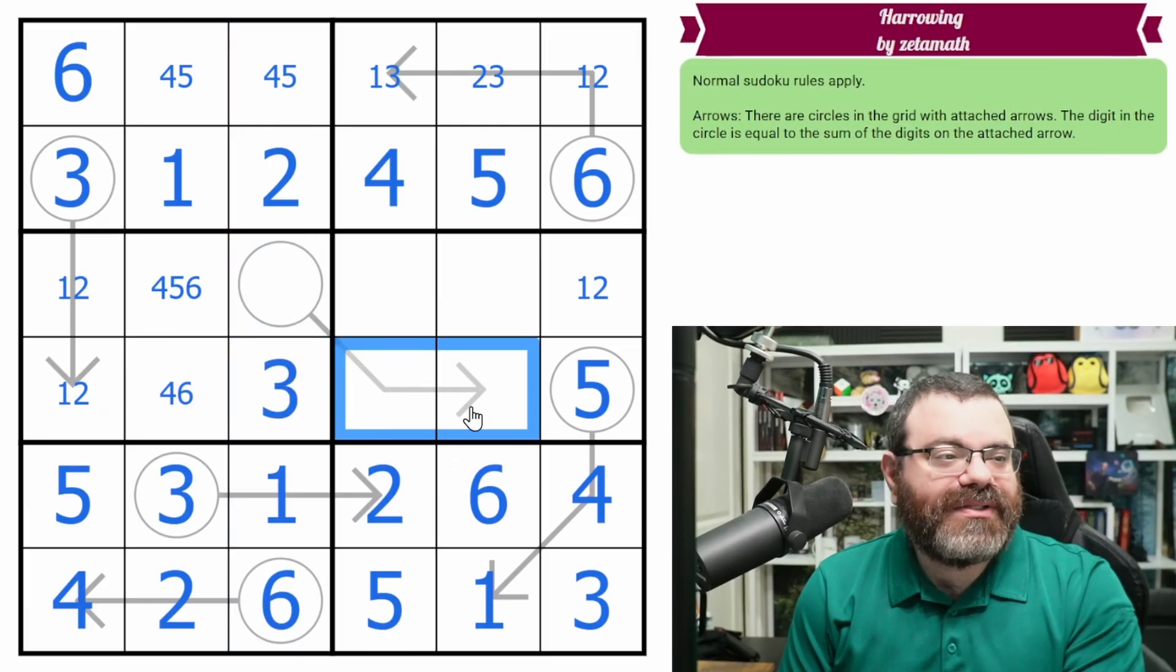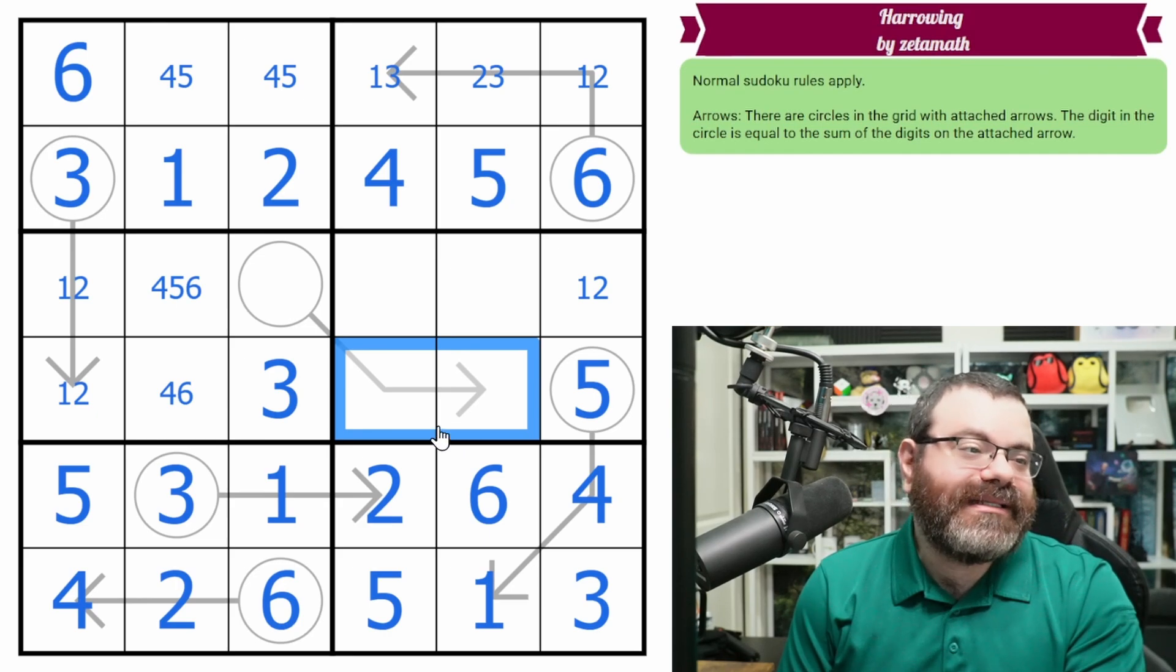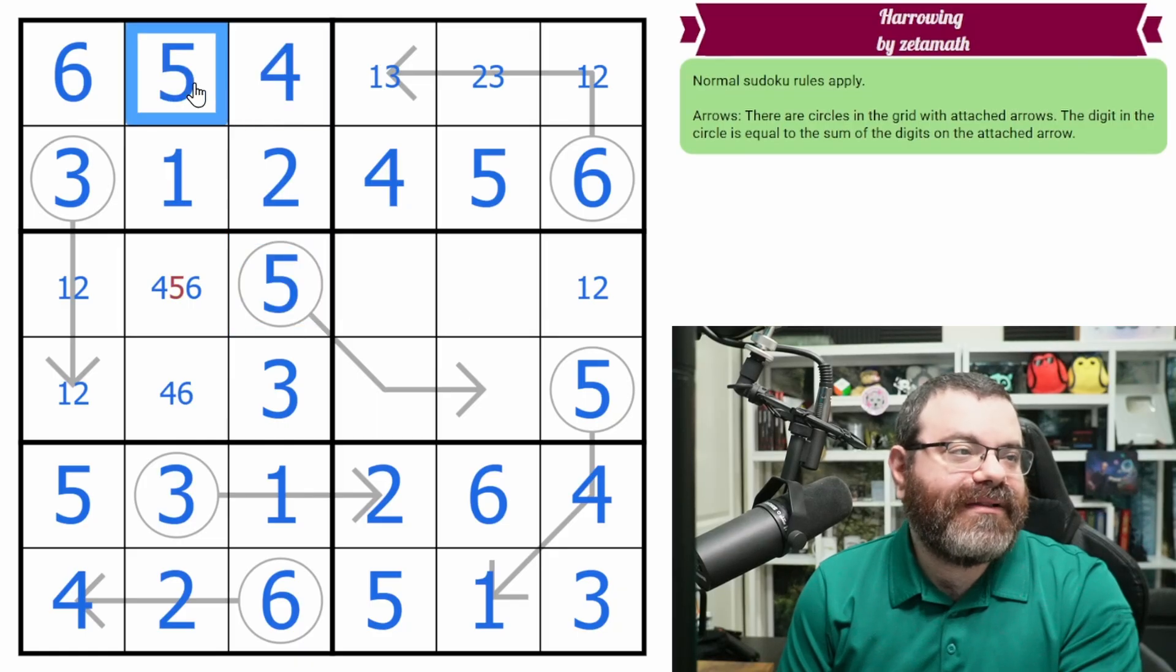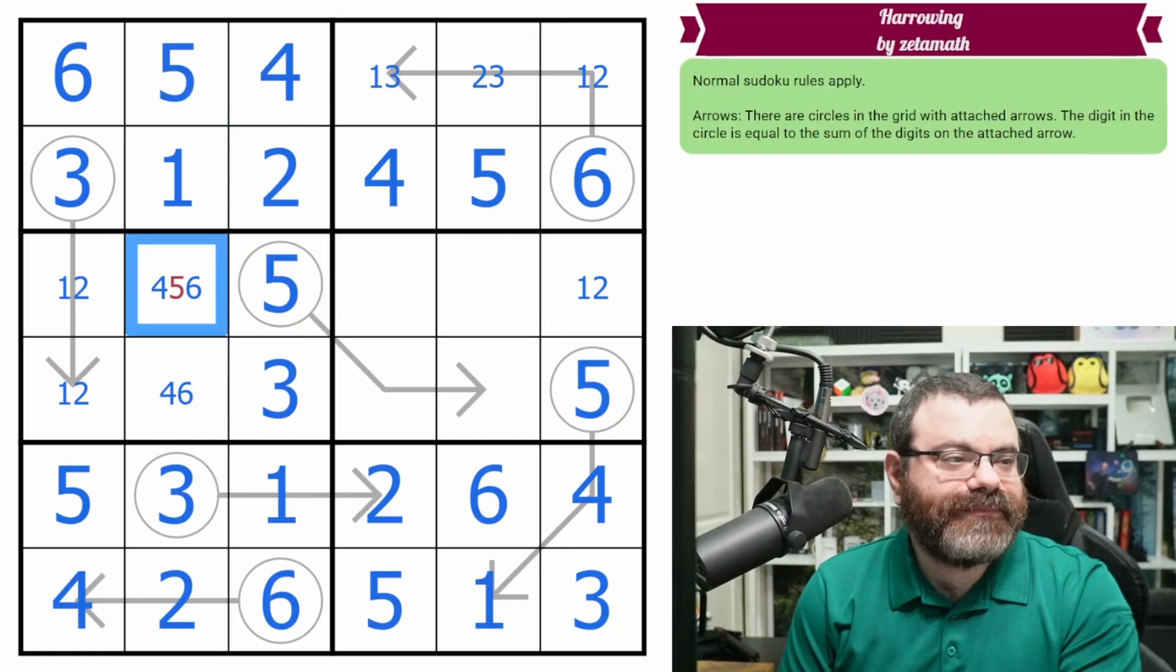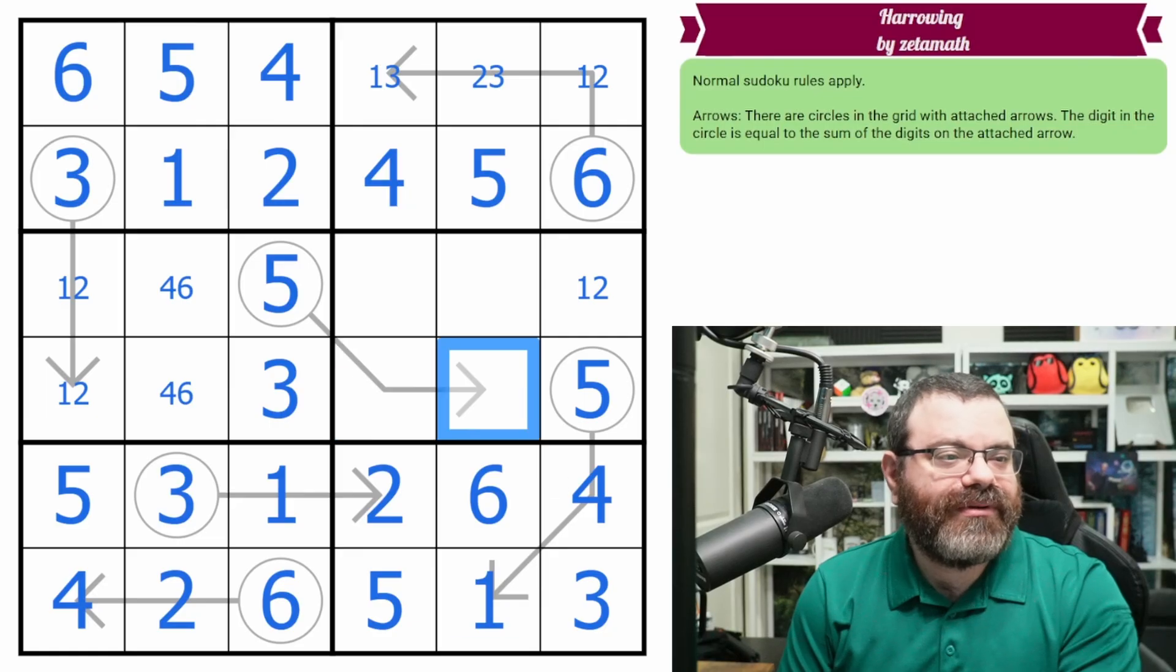And now we know we can't put a 3 on it. So it can't be 1, 2. It can't be 1, 3. So it's actually not 3 or 4. So this actually has to be a 5. That's 5. Sorry. That's 4. That's 5. Adding to 5 without a 3 requires us to do 1, 4. We know the order. That's 4 and 1.